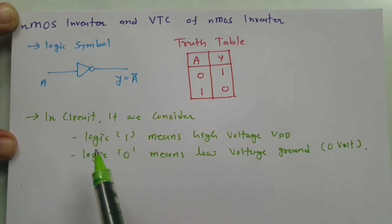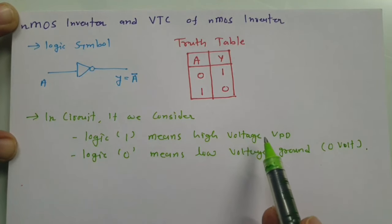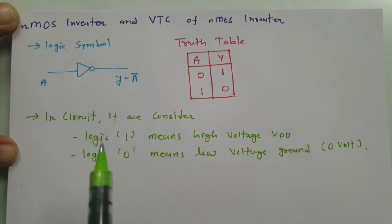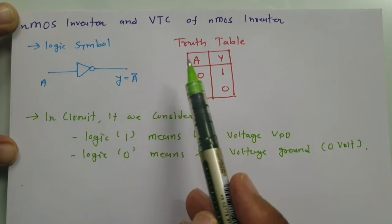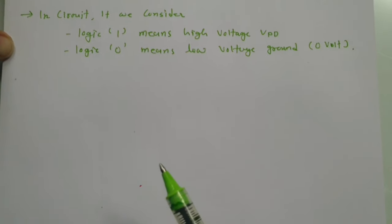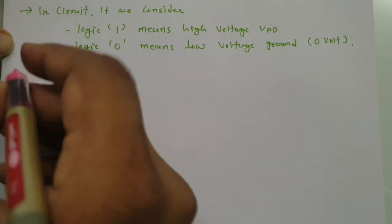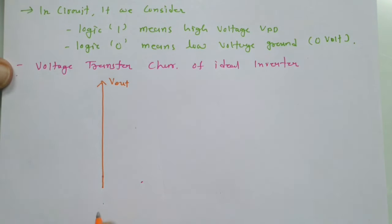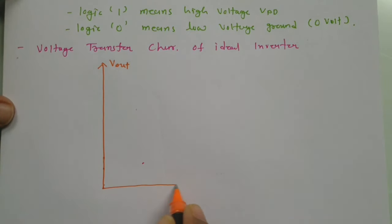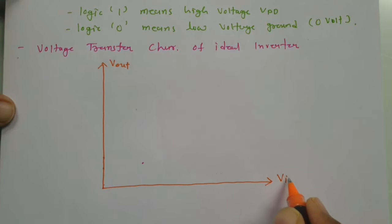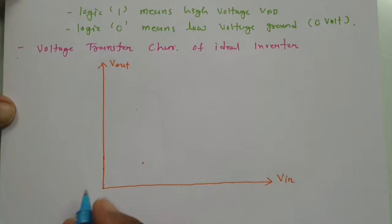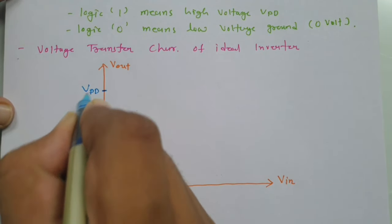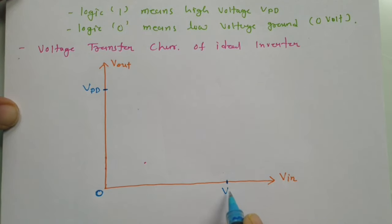Let us understand this by voltage transfer characteristics. In voltage transfer characteristics, on the Y axis we have output voltage Vout, and on the X axis we have input voltage Vin. Here we have zero voltage and a maximum voltage VDD on the output axis, and with input we also have a maximum voltage VDD.